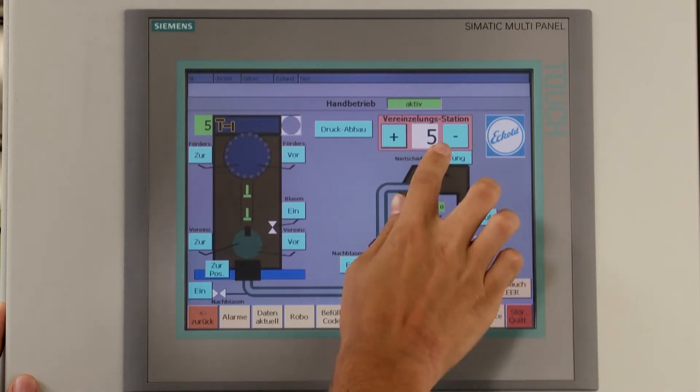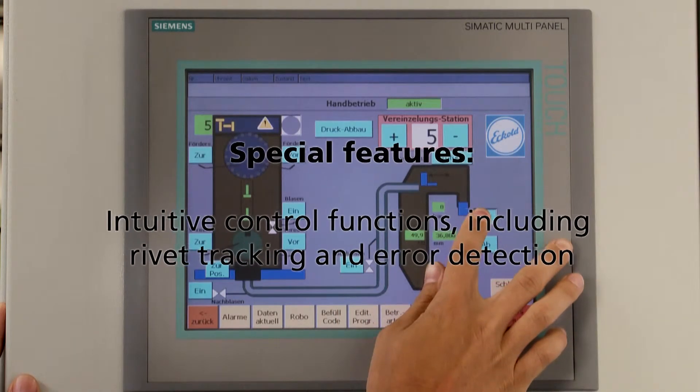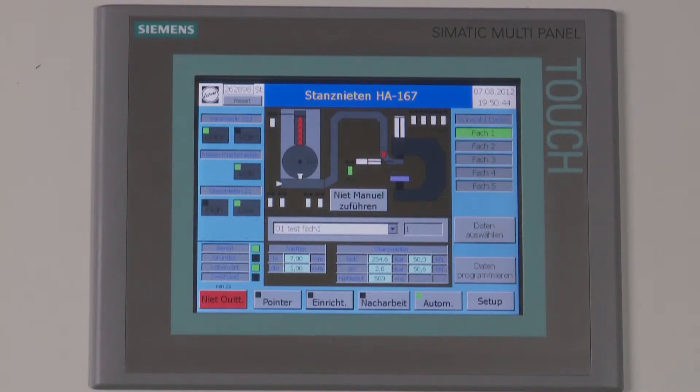The control system of the unit is easy to operate and password protected. It can be configured for various different user groups and allows for rivet tracking and error detection.